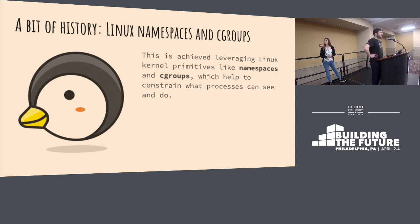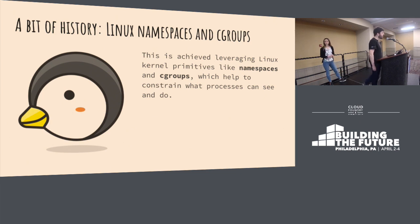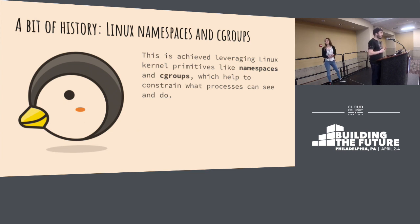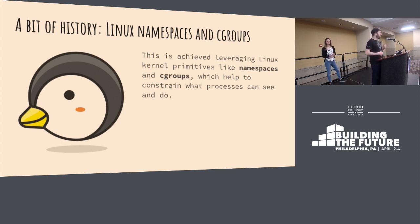How do we do this? The Linux kernel has been providing primitives to achieve containerization for quite a long time. In particular, the Linux kernel provides namespaces and cgroups. Namespaces basically allow us to limit what a process on the system can see, and cgroups allow us to limit what a process can do on the system.